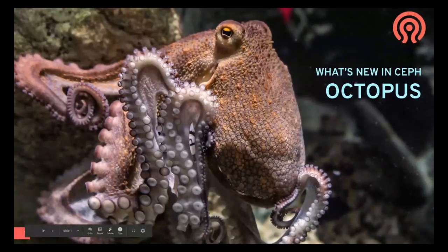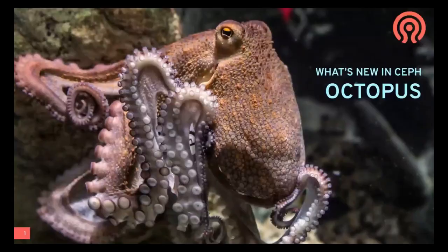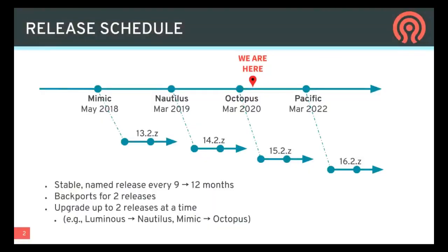First I'll talk about what's new in Octopus. Octopus is the latest stable Ceph release. We're on a yearly schedule now — Octopus was released in March this year, and Pacific will be in March 2021. We're still backporting two releases back, so we're still fixing bugs in Mimic and Nautilus. You can upgrade up to two releases at a time, so you can go directly from Luminous to Nautilus or from Mimic to Octopus, but to go from Luminous to Octopus you have to stop in Mimic or Nautilus first.